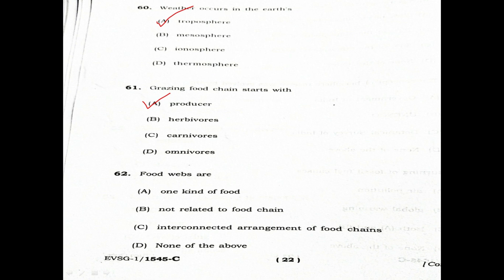Question 62: Food webs are. Option A: One kind of food. Option B: Not related to food chain. Option C: Interconnected arrangement of food chains. Option D: None of the above.